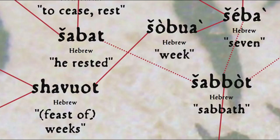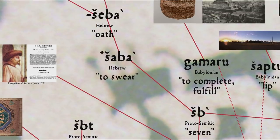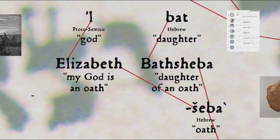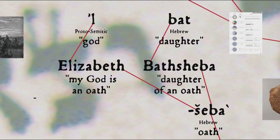By the way, this Proto-Semitic seven root also appears in a number of biblical names, though in the rather different sense of 'oath' — possibly from the idea of binding oneself with sevens in swearing oaths, since seven was thought of as an important mystical number. Thus, Bathsheba means 'daughter of an oath,' in combination with bat meaning 'daughter' — also in bat mitzvah — and Elizabeth means 'my God is an oath,' from the same root that lies behind Elohim.